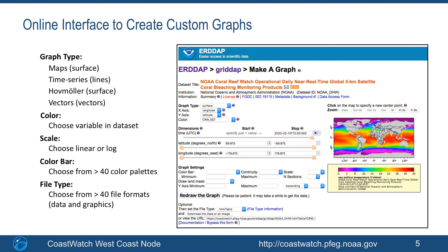The graphical interface provides a user-friendly way to create a customizable graph, but since all data requests are given as a URL, one can make changes by directly changing the URL. In order to do that, it helps to understand the grammar of the ERDDAP URL data request.